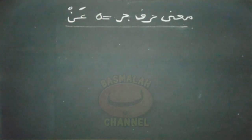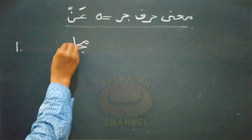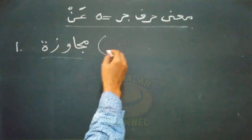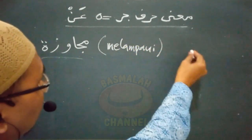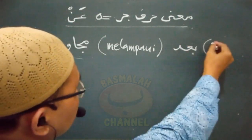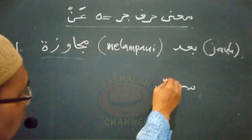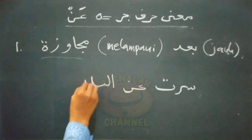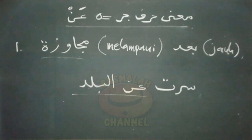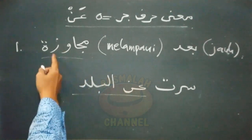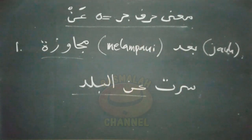An merupakan huruf jer yang memiliki beberapa makna. Makna yang pertama adalah bermakna mujawazah, yaitu bermakna melampaui dan juga bermakna bu'dun, artinya jauh. Contohnya seperti lafad 'sirtu anil baladi', sirtu artinya saya berjalan, anil baladi artinya jauh melampaui negeri itu. An dalam susunan ini mengandung makna mujawazah dan juga bu'du, yaitu melampaui dan melewati hingga jauh setelahnya. Ini makna yang pertama.